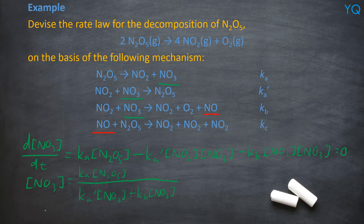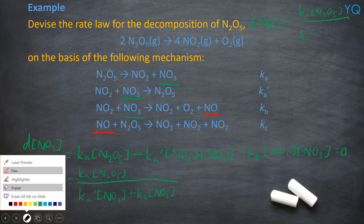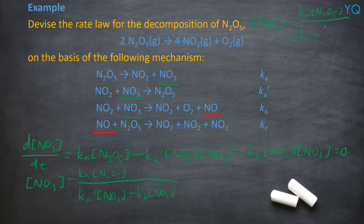To simplify, you can group the Ka' and Kb terms together since both are multiplied by [NO2]. So [NO3] = Ka[N2O5] / ((Ka' + Kb)[NO2]). That's the first steady-state equation solved.